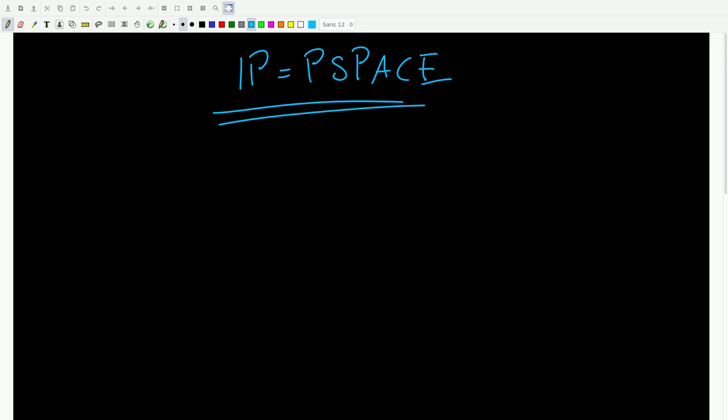Hi! So in this video I want to go through my current number one favorite proof in computational complexity theory, the proof for IP equals PSPACE.